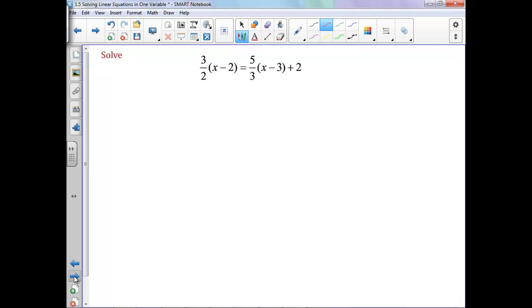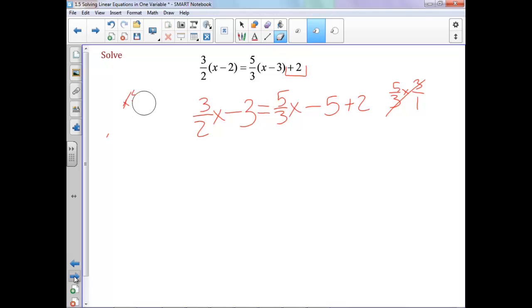This one looks more complicated, however, it's following the same idea. We want to distribute first, get rid of our parentheses. So I'll have 3 halves x minus, and now notice when you do 3 halves times 2 over 1, our 2's will cancel, we're left with 3. And then on the right side, 5 thirds x minus, same idea, 5 thirds times 3 over 1, your 3's cancel, 5. And then we still have this plus 2 at the end. Notice the 2 is not in parentheses, therefore it is not getting multiplied by that 5 thirds.